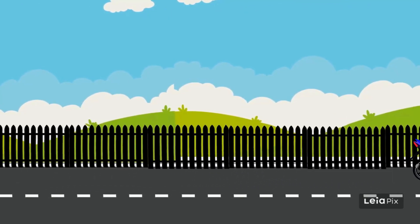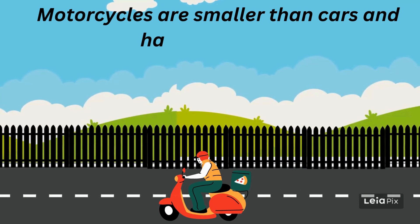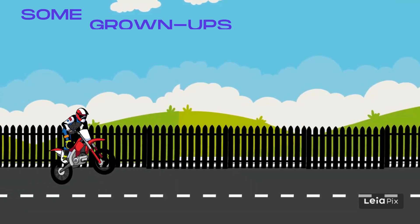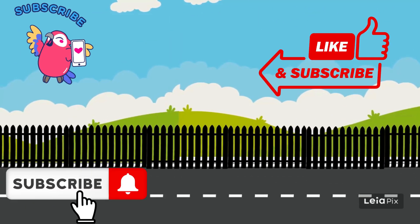Motorcycle. Motorcycles are smaller than cars and have two wheels. Some grown-ups use them to travel around town.